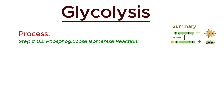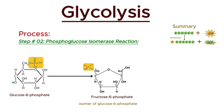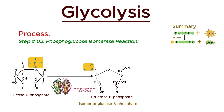In the second step of glycolysis, glucose-6-phosphate undergoes a structural rearrangement to form fructose-6-phosphate. This reaction is catalyzed by the enzyme phosphoglucose isomerase. This isomerization step converts the six-membered ring of glucose-6-phosphate into the five-membered ring of fructose-6-phosphate, making the molecule more suitable for subsequent steps in glycolysis. At the end of this step, we obtain fructose-6-phosphate, catalyzed by phosphoglucose isomerase.